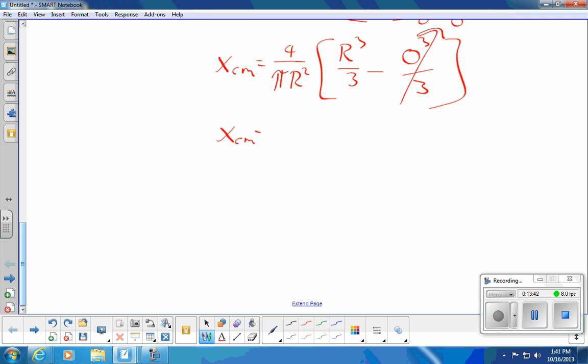And I'm basically done. X_cm is equal to, I've got R cubed over R squared. So I'm going to have a 4R on top and 3π on the bottom. I can write this as 4 over 3π times R. 4 over 3π is less than 1. So in fact, the center of mass is between 0 and R. I am happy.